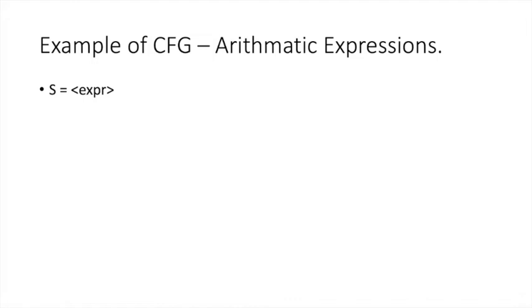The start symbol S in this case equals a non-terminal we'll call expra. It is common to put angle brackets around non-terminals. Now, expra means nothing to us yet, so how can it lead to arithmetic expressions? The first production rule states that an expra can expand into an expra plus another expra. We still don't know what expra is — all we know is that we can add one of its kind to another. This is rule number zero.